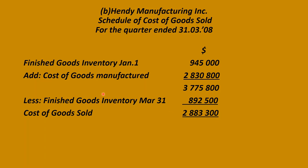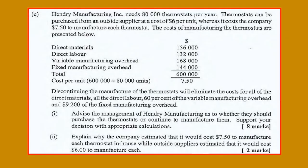The only difference is the replacement of purchases with the cost of goods manufactured. Part C continues with Henry Manufacturing. We are given some data, and what they require is: advise the management of Henry Manufacturing as to whether they should purchase the two moustaches or continue to manufacture them, supporting the decision with appropriate calculations.